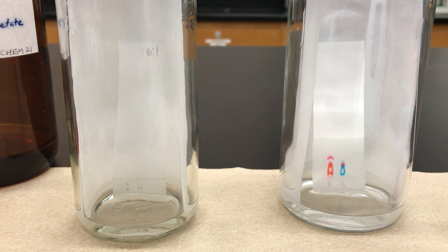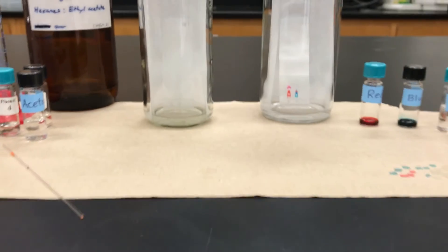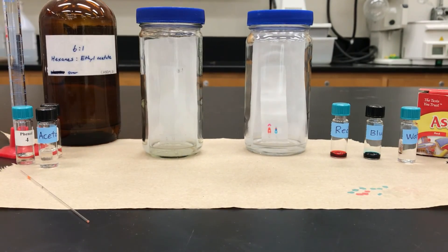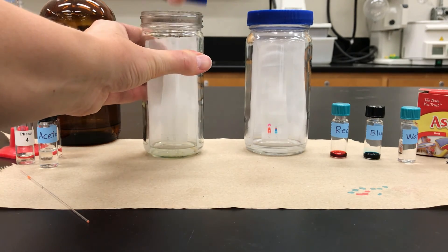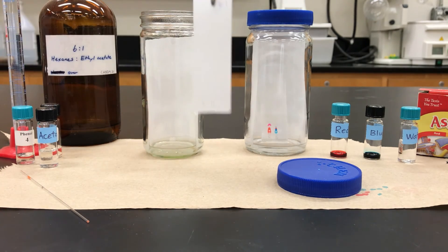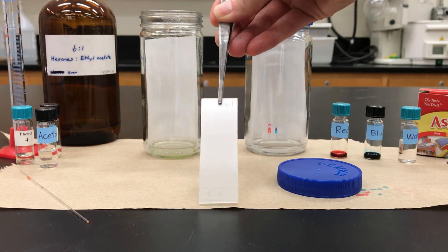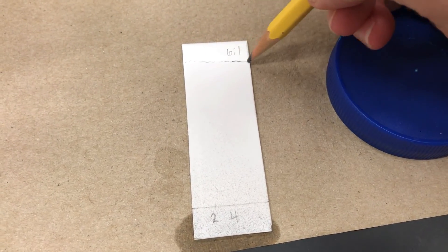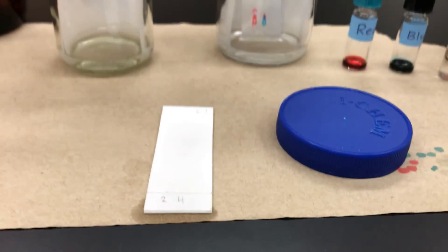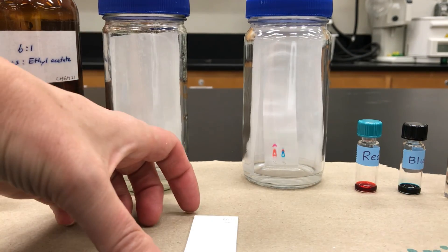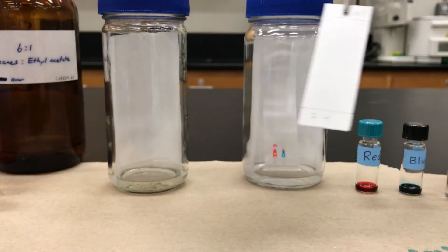The solvent front on the TLC on the left is nearly to the top, maybe a centimeter or so from the top. And so I'm going to take it out. So you open up the jar, get your forceps and pull it out. If your solvent is somewhat nonpolar, it's going to evaporate pretty quickly, which means you need to right away take a pencil and mark the top of the solvent line because it will disappear on you.